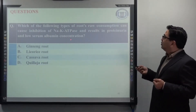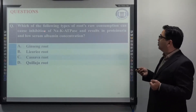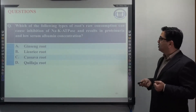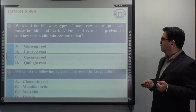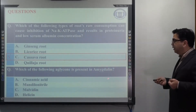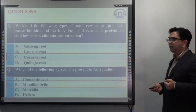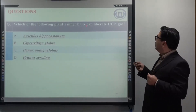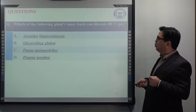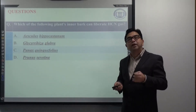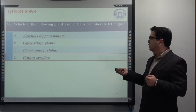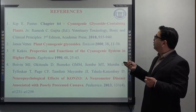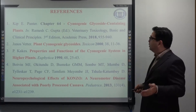To answer some review questions: which type of root's raw consumption can cause inhibition of sodium-potassium ATPase and result in proteinuria and low serum albumin concentration? The answer is cassava root. Which aglycone is present in amygdalin? The answer is mandelonitrile. Which plant's inner bark can liberate HCN? The answer is Prunus serotina, which is the botanical name of wild cherry.